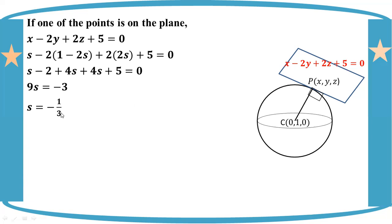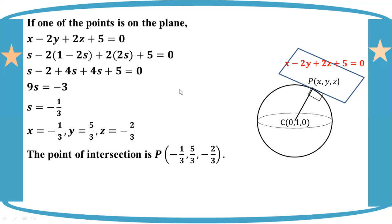The plane: minus 1 minus 3. Y1 minus 2 is like 5 by 3. 2 is like 2 and 3. A1 minus 1 minus 3. Y5 by 3 is minus 2 by 3. The point of intersection is P equals minus 1, minus 3, 5/3, minus 2/3. Now at this time you can show how you do this calculation.